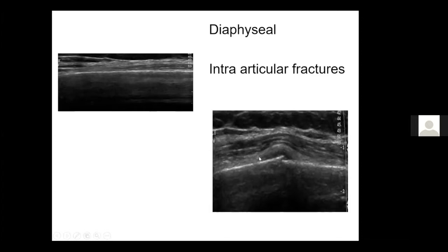Here's an example of a diaphyseal fracture of the rib. You can see the cortex very clearly here — it's a white line, highly reflective. Ultrasound is reflected by bone because it contains calcium, and there's no image beyond it.